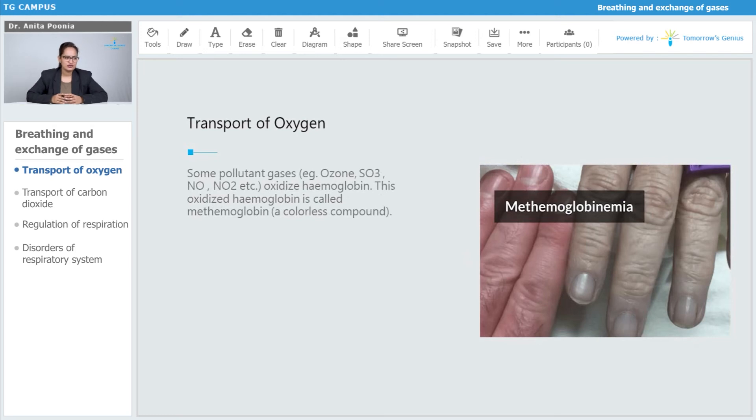Some pollutant gases like ozone, SO2, NO2, or NO oxidize the hemoglobin. This oxidized hemoglobin is called methemoglobin, which is a colorless compound, and this causes methemoglobinemia. As you can see the color of the skin.